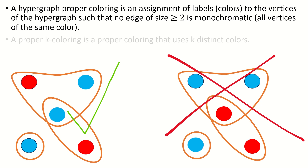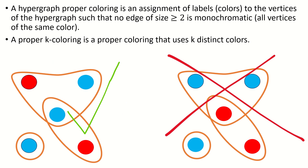A proper k-coloring is a proper coloring that uses k colors. In the example on the left, we see a 2-coloring that's proper, because there's no edge with at least two vertices where all vertices receive the same color. In the example on the right, we see a 2-coloring that's not proper, because the edge of size 2 is monochromatic.